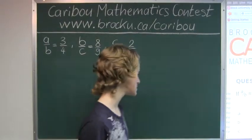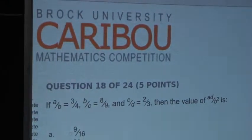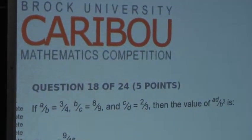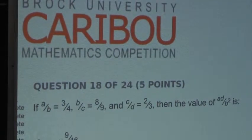So the question is, if A over B equals 3 over 4, B over C equals 8 over 9, and C over D equals 2 over 3, then the value of AD over B squared is...